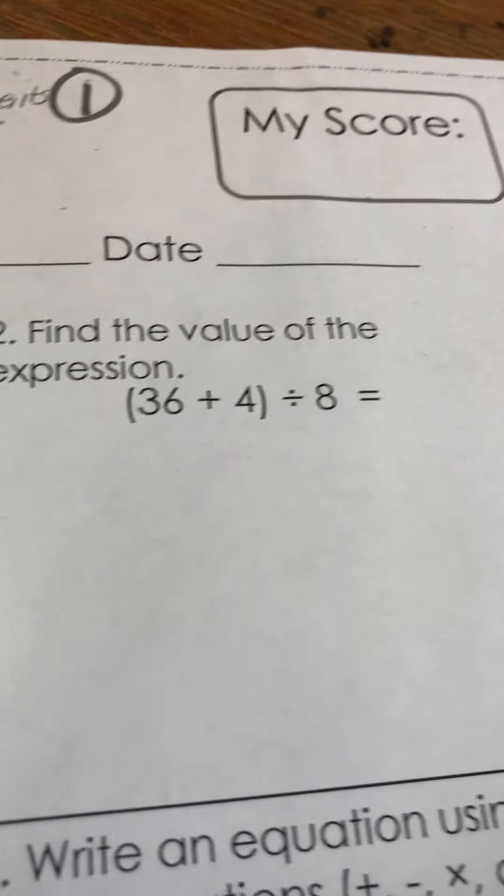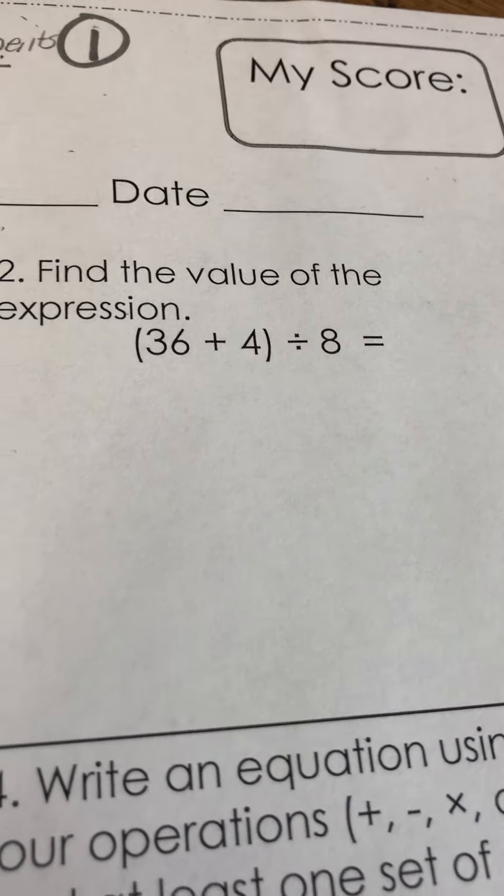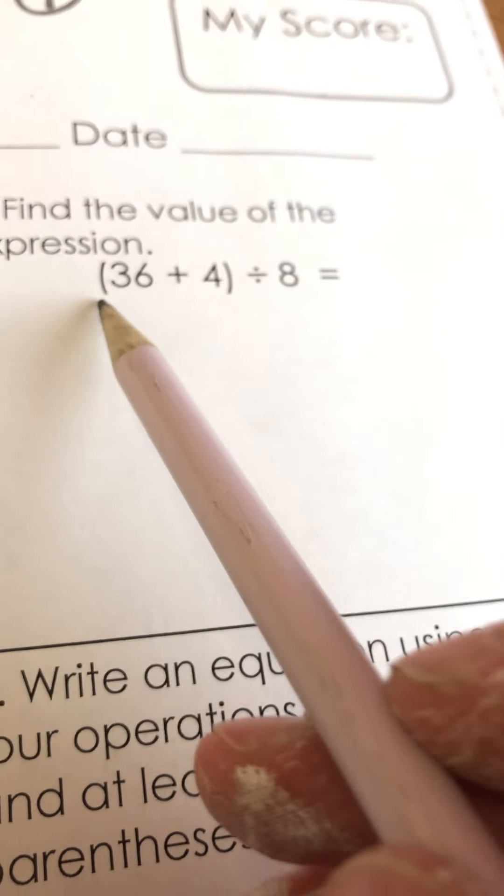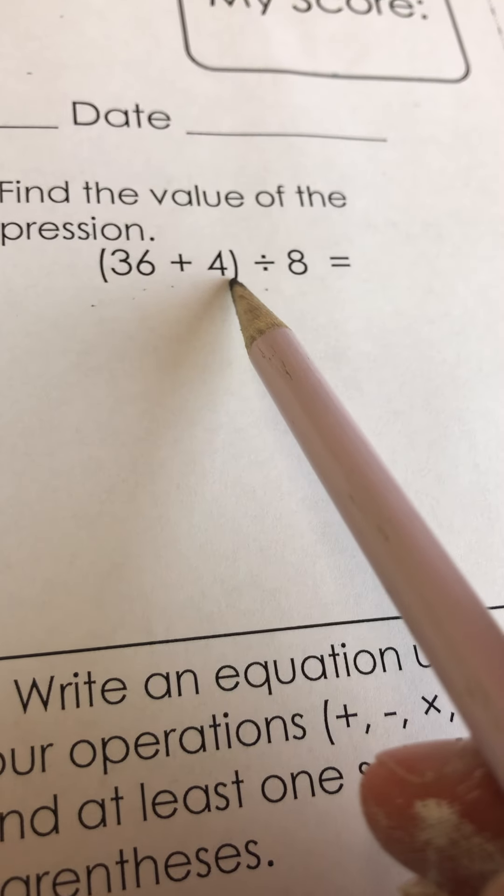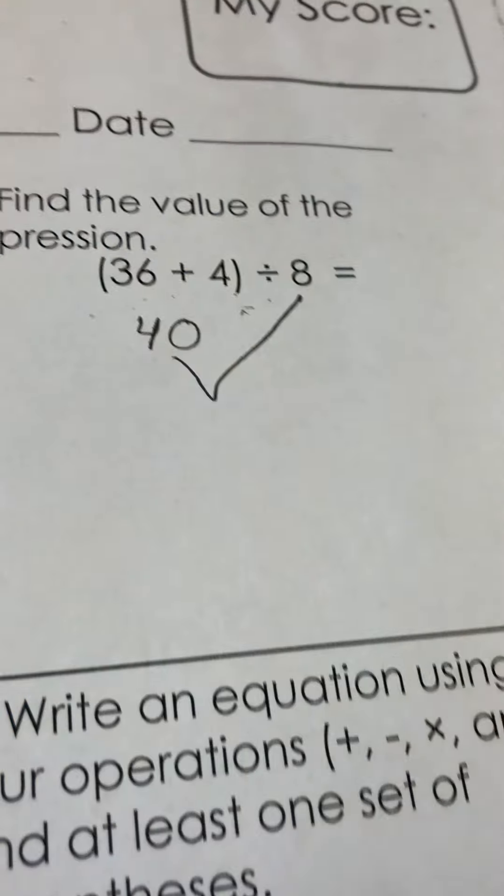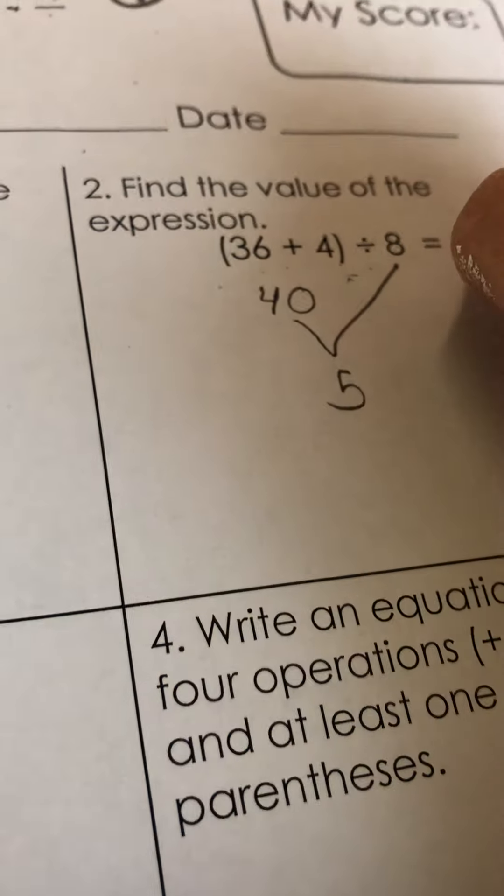Okay, then we're going to find the value of the expression 36 plus 4 divided by 8. According to order of operations, I need to do what's inside the parentheses first. So 36 plus 4 is 40, and then divide 40 by 8 and I get 5. So my answer is 5.